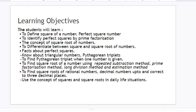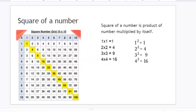The learning objectives of the chapters are flashed. You may read it. Now what is the square of a number? The square of a number is the product of number multiplied by itself.